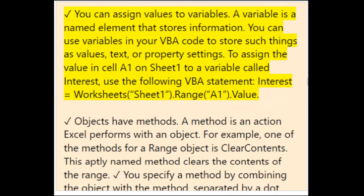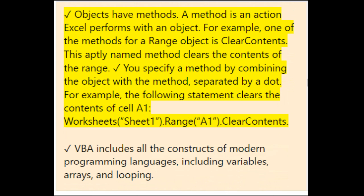A variable is a named element that stores information. You can use variables in VBA to store values, text, or property settings. To assign the value in cell A1 on Sheet1 to a variable called Interest: Interest = Worksheets("Sheet1").Range("A1").Value. Objects also have methods — an action Excel performs with an object. For example, the ClearContents method for a Range object clears its contents: Worksheets("Sheet1").Range("A1").ClearContents.